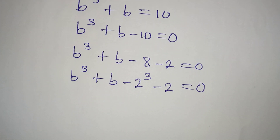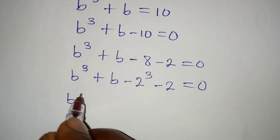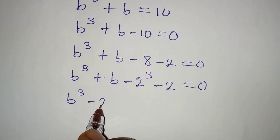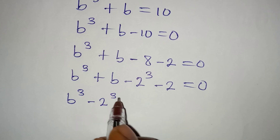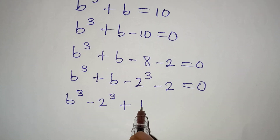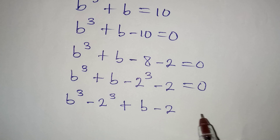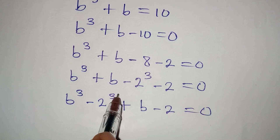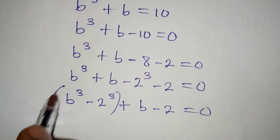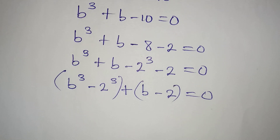Now we can compare what we have, bringing the cubic terms together as b to the power of 3 minus 2 to the power of 3, then plus b minus 2, which is equal to 0. So let's deal with these two parts separately.